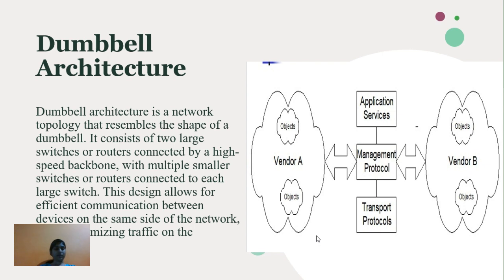In network management, dumbbell architecture can be used to improve scalability and reliability. By distributing traffic across multiple switches or routers, the network can handle more devices and avoid a single point of failure. Additionally, this approach can improve performance by reducing congestion on the backbone during network transmission.